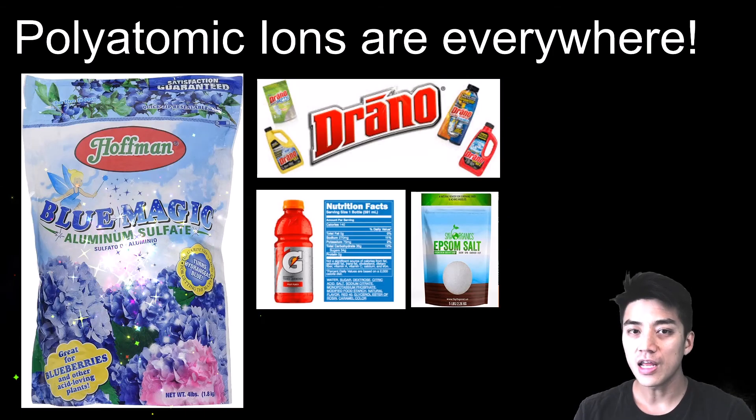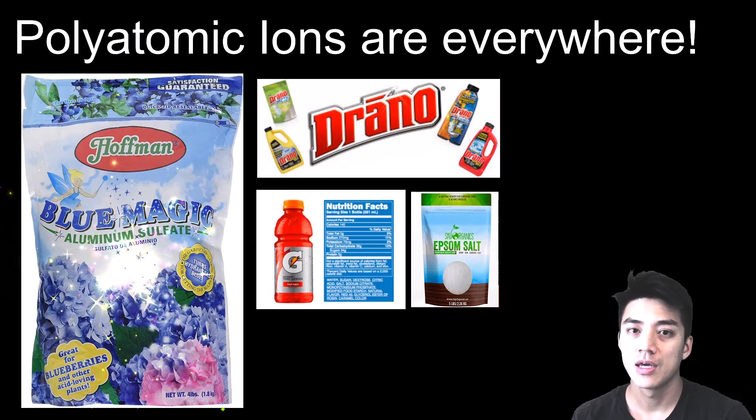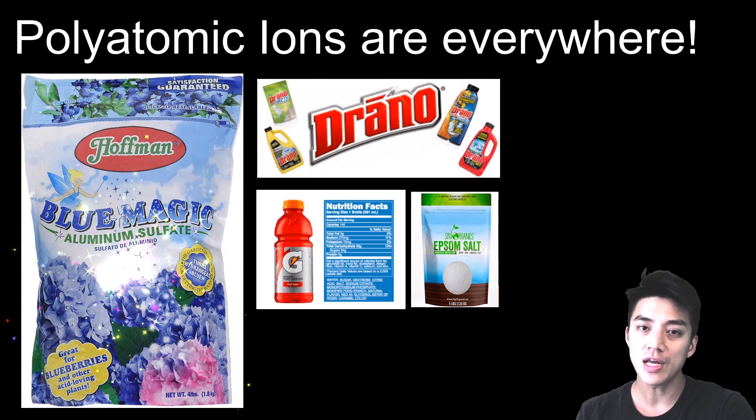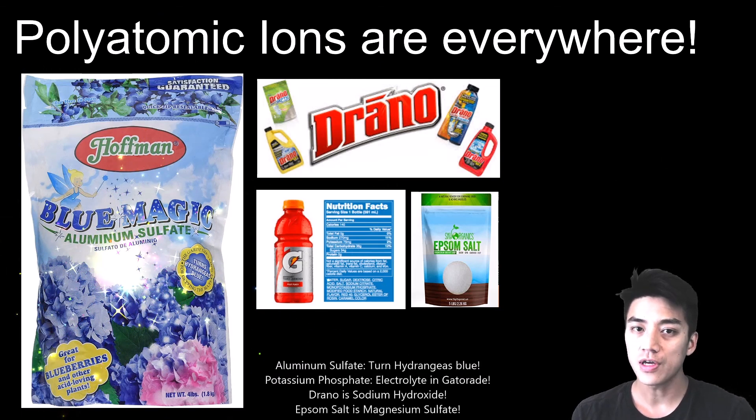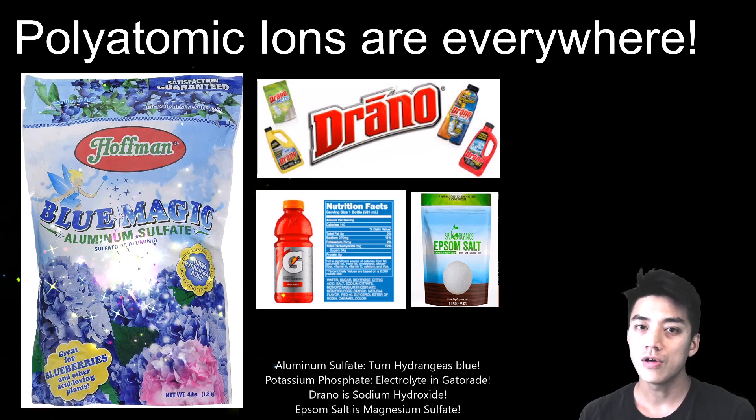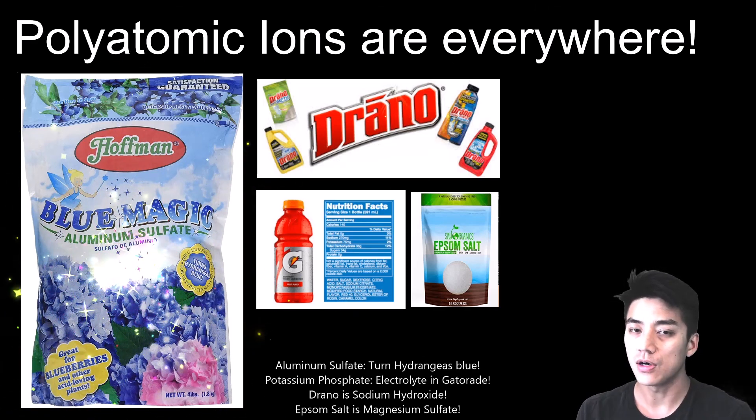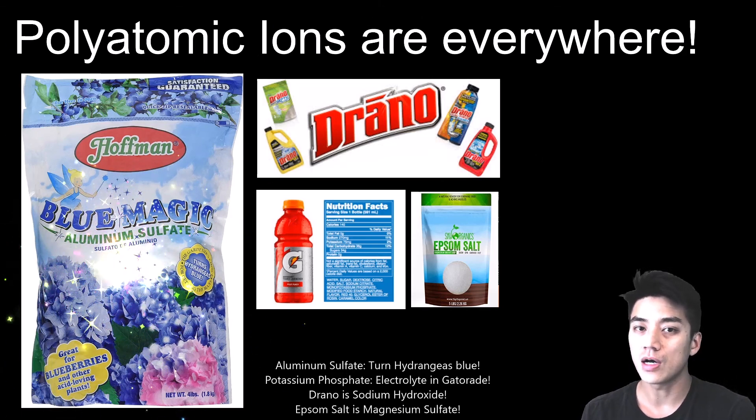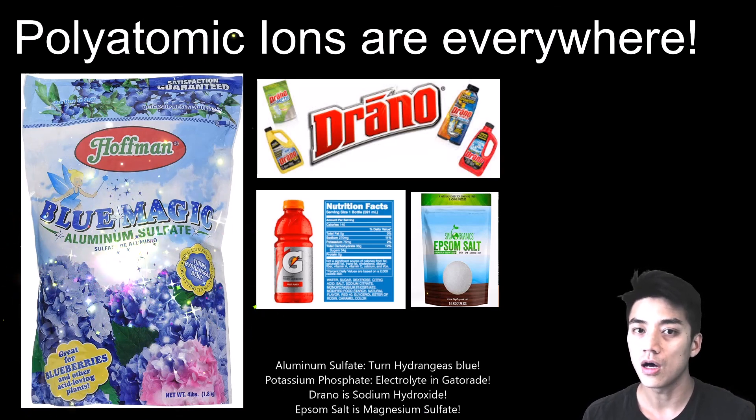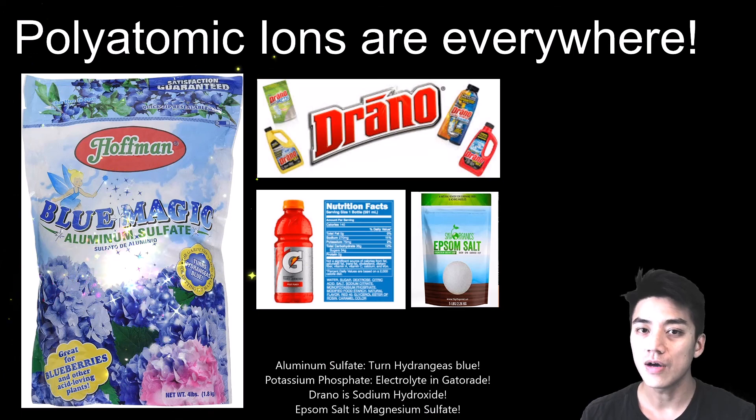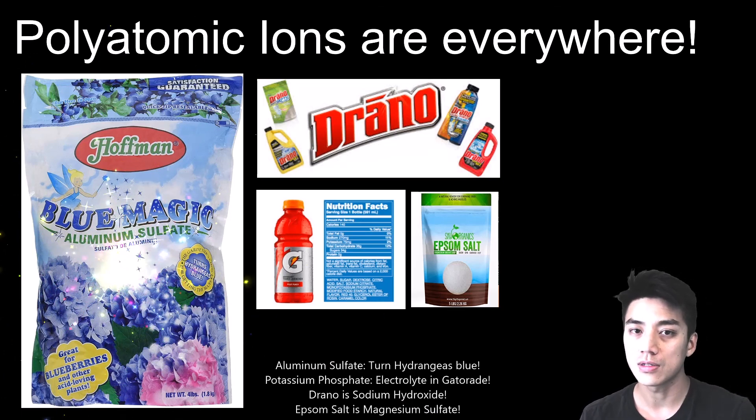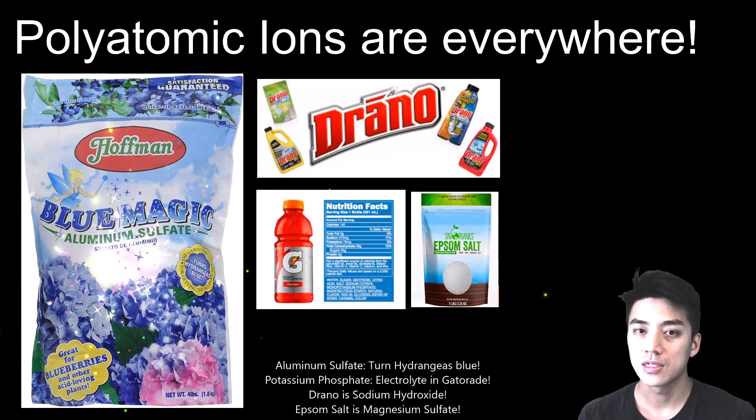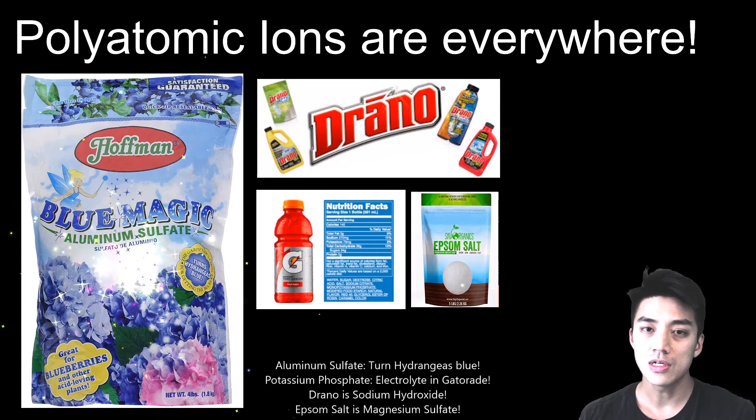I hope you had fun naming polyatomic ionic compounds. Polyatomic ions are found pretty much everywhere in the world and have many household uses. For example, aluminum sulfate can help your hydrangeas turn blue. Potassium phosphate is a type of salt found in Gatorade. Drano is the common name for sodium hydroxide and helps clear your sinks and clogged toilets. And finally, Epsom salts, which we discussed earlier, have many uses such as fertilizing plants and treating ankle sprains. I hope you learned a lot in this video. Thanks for tuning in, and I'll see you next time on Wind Chemistry.